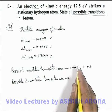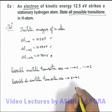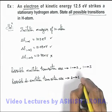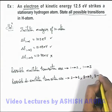So if it is from 1 to 2, the possible de-excitation will be from 2 to 1. And if it is excited from 1 to 3, then the possible transitions will be 3 to 2 as well as 3 to 1.